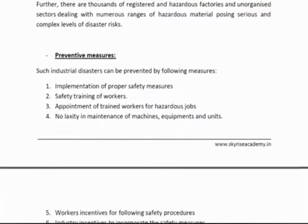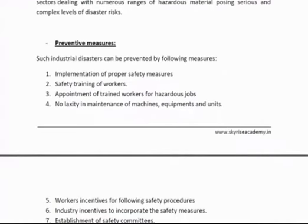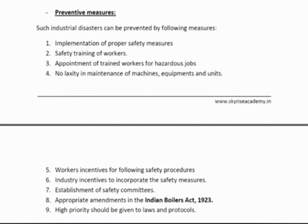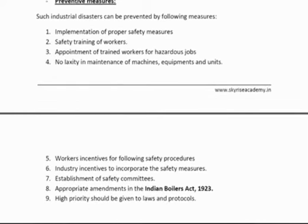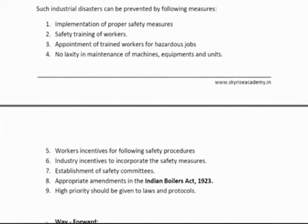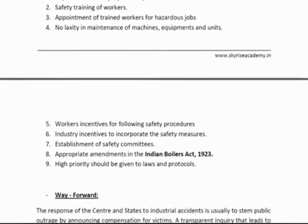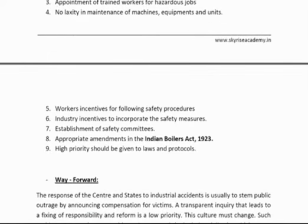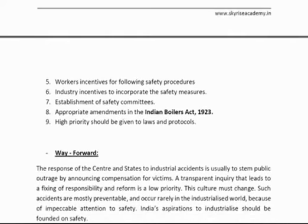What preventive measures can be taken? Implementation of safety measures, safety training of workers, and appointment of trained workers. There should be no laxity in the maintenance of machines, equipment, and units. Incentives should be provided to both workers and industry to follow safety protocols. Safety committees should be established. Amendments are required in the Indian Boiler Act to make it more stringent, with more severe punishments and high priority given to laws and protocols.